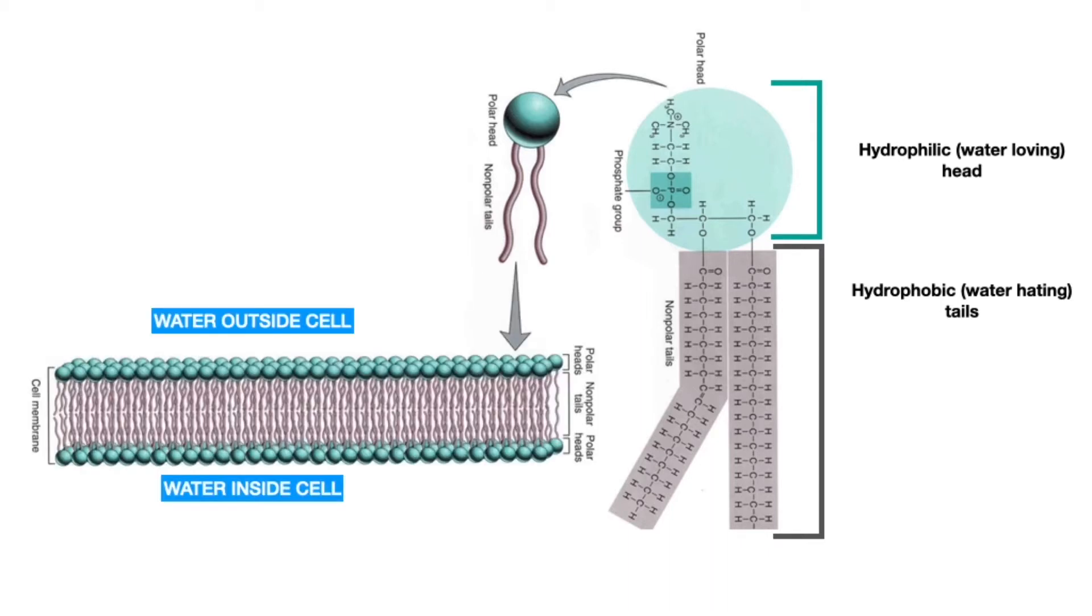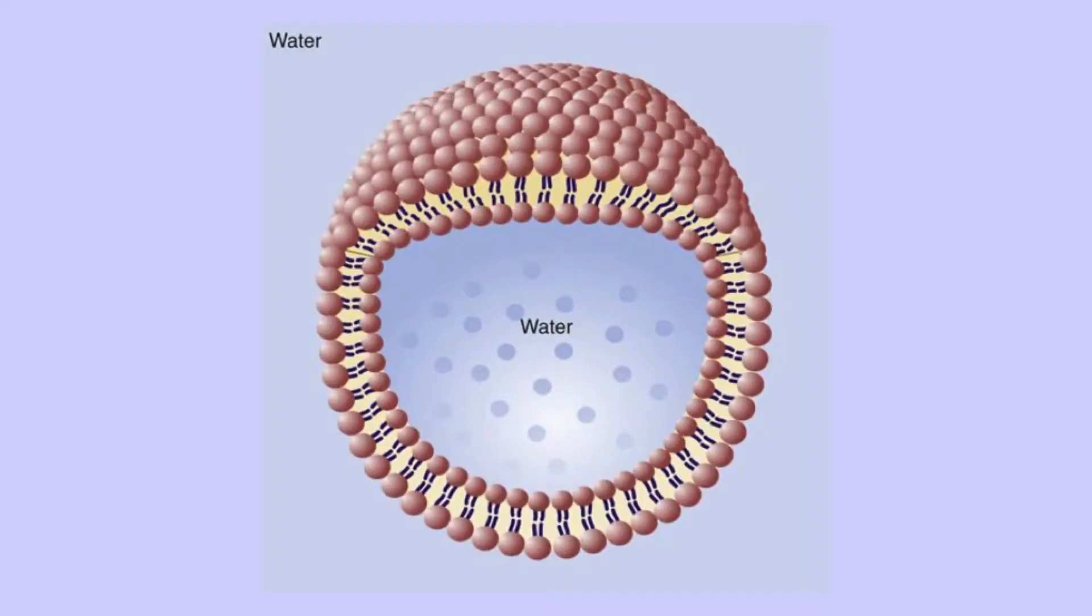Only the hydrophilic heads interact with the watery environment and the hydrophobic tails crowd inward away from the water. In three dimensions it would look like this, with the heads facing the watery exterior and interior of the cell and the hydrophobic fatty acid tails sandwiched in between the phosphate heads away from the water.